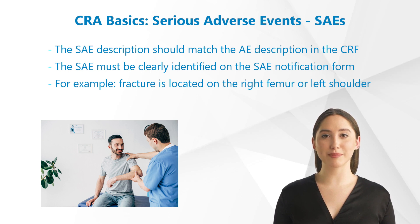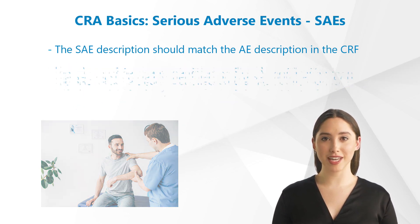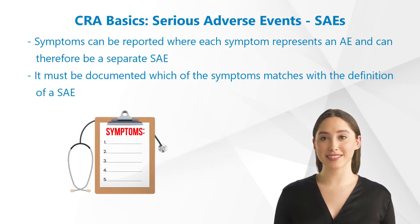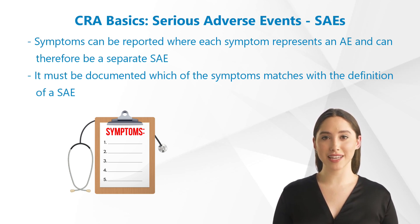For example, for a fracture that leads to hospitalization, the investigator must write where the fracture is located — for example on the right femur or left shoulder. If this is not possible, symptoms can be reported where each symptom represents an adverse event and can therefore be a separate serious adverse event.